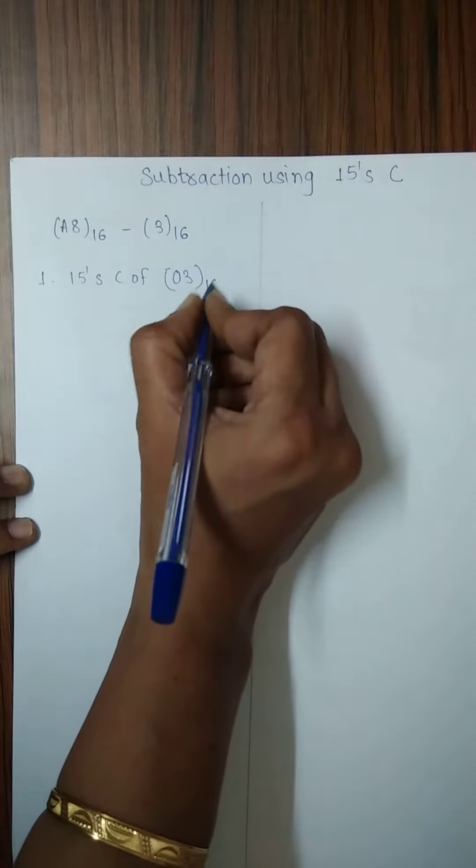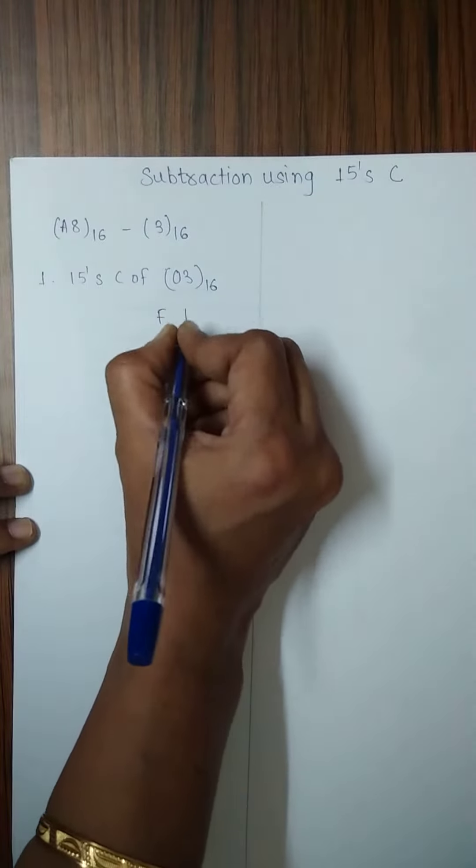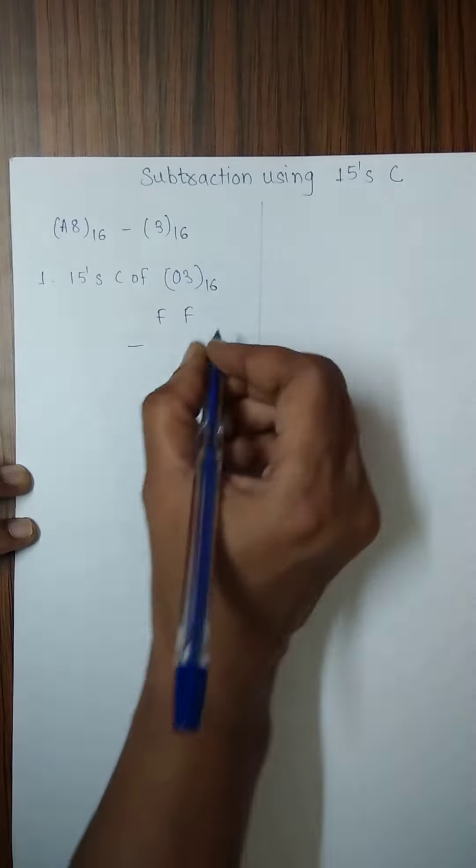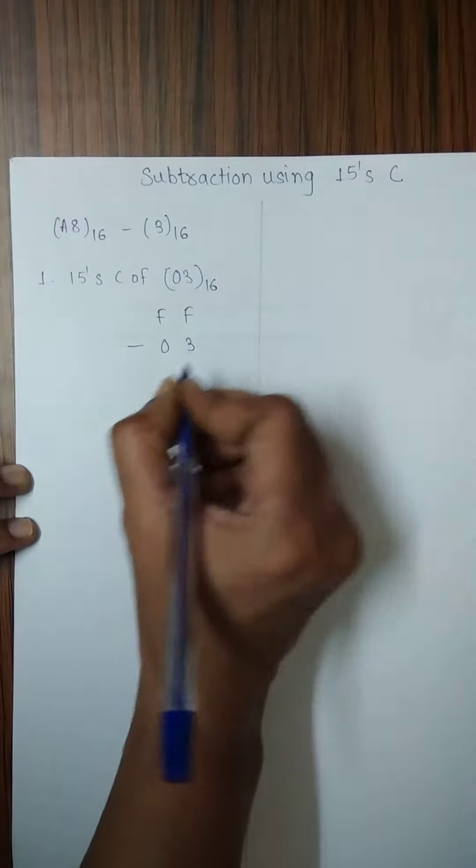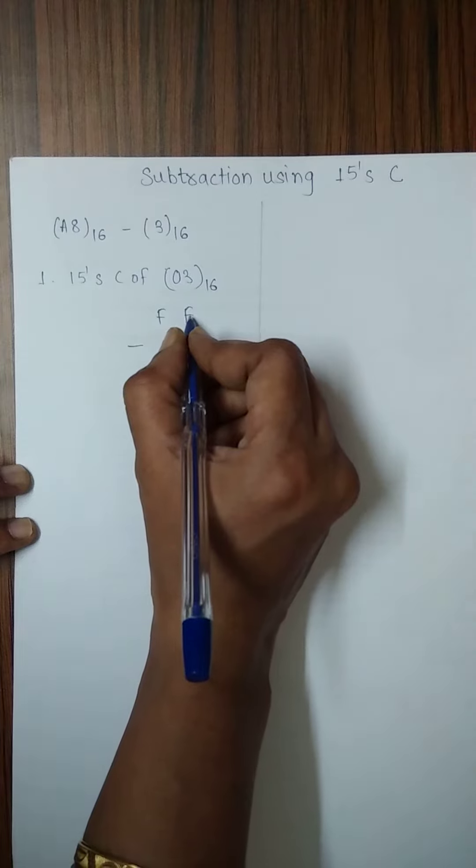So 15's complement of 03 base 16 can be obtained by subtracting 03 from the highest number in the hexadecimal numbering system which is 15.